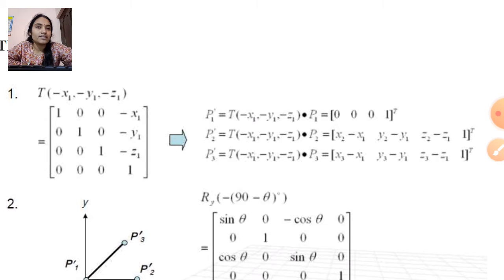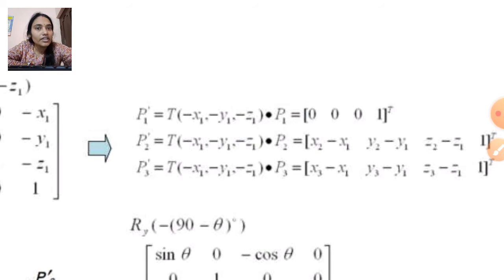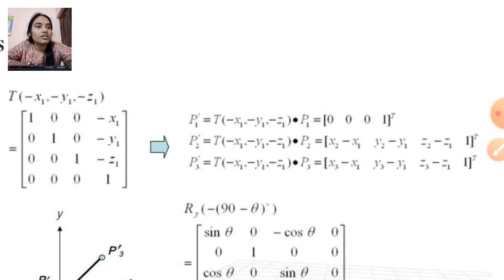P1-dash equals T(-X1, -Y1, -Z1) into P1, which equals (0, 0, 0, 1) transposed. Then P1-dash and P3-dash — all these things we will write in the same manner.